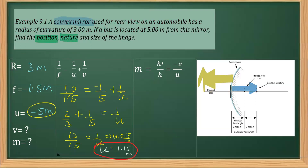So we have the position as well as the nature of the image: it is virtual and erect. Now we also have to find the size of the image. Since the size of the object is not given, we find the magnification. Magnification is the ratio of the size of the image to the size of the object, which is also equal to −v/u.